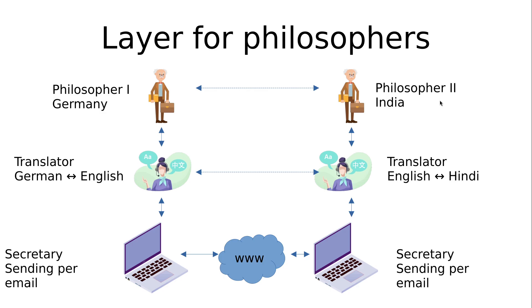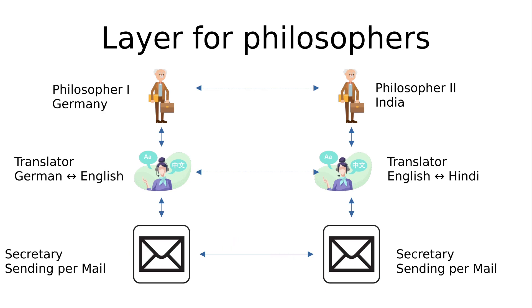I also mentioned that layers are exchangeable. So let's say the translator doesn't use English, but instead both sides translate to Spanish. For the philosopher's point of view, nothing changes — the philosopher from India still hands the letter in Hindi to the translator, who then translates it to a different language, and everything still works. Or, you may know that in Germany some areas have very bad internet, so maybe the secretary doesn't use email but instead uses traditional mail. It will take more time for the information to arrive, but for the philosopher's or even the translator's point of view, nothing changed. They are just using their standardized and normed interfaces, passing and receiving information from there.